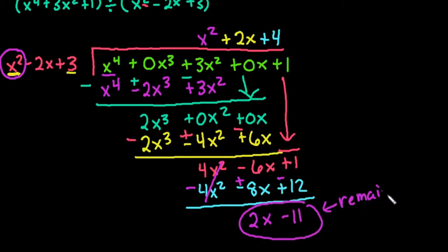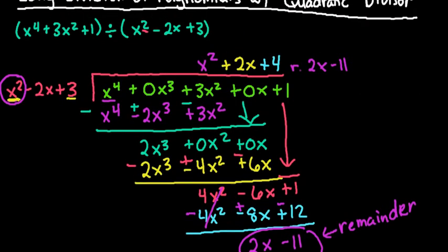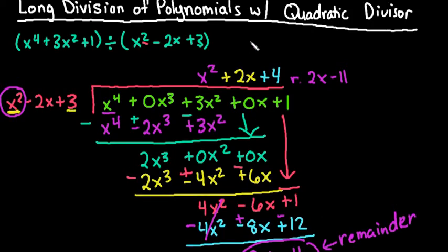So depending upon how you are required to answer it, in some texts they will have you do this and then they will just say remainder 2x minus 11. But in a lot of other ones what you would do is you would write the quotient as x squared plus 2x plus 4.